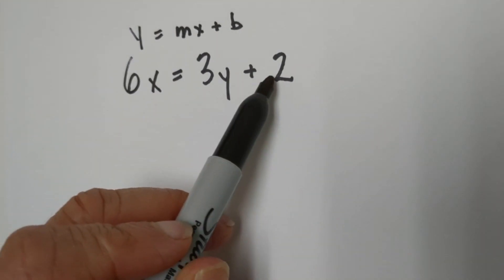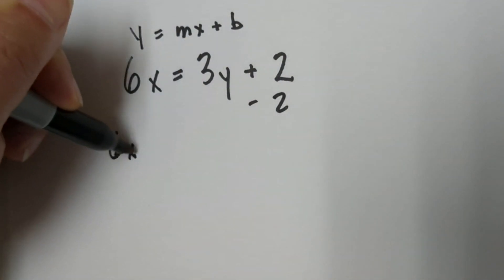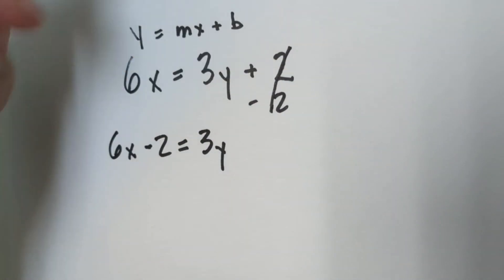Let's first move this 2 to the other side by subtracting 2 from each side. So we have 6x minus 2 equals 3y and these will cancel.